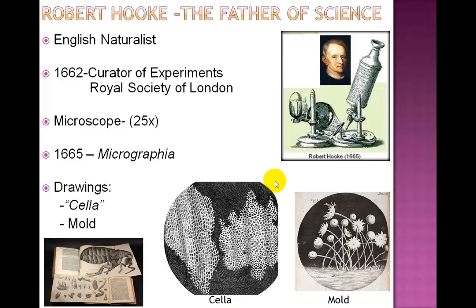Before the 1800s, scientists were named as naturalists. Robert Hooke was an English naturalist who became a curator of experiments of the Royal Society of London in 1662. As a curator, he was responsible for demonstrating new experiments at the society's weekly meetings. He used a microscope that could magnify a specimen 25 times to study many of the small living organisms, including insects.